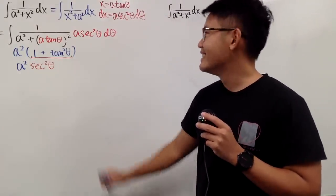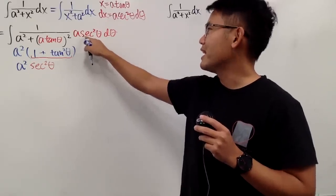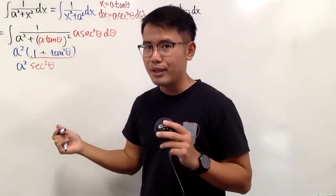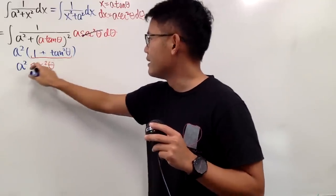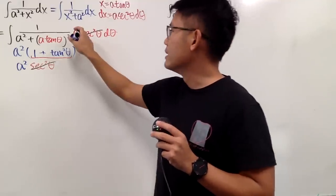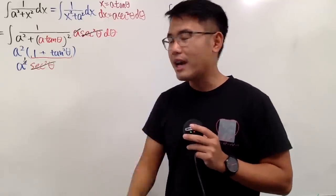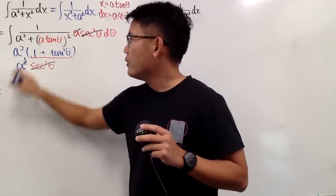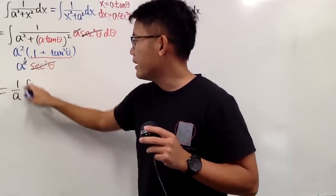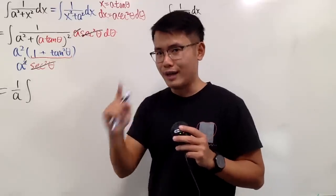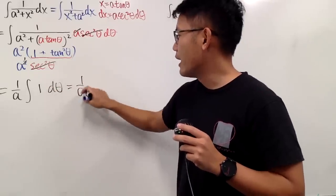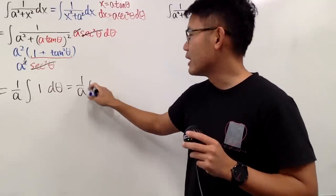Here we have secant squared theta in the denominator, and secant squared theta from the dx substitution in the numerator. Therefore I can cancel these out. Then we have a over a squared — we can reduce the a, so we have a to the first power. We technically have 1 over a. Let me take the 1 over a to the front of the integral. Integrating everything inside, which is just 1, we get 1 over a times theta.